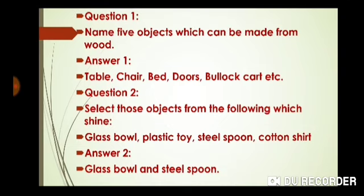Question number one: Name five objects which can be made from wood. पांच ऐसे objects बताएं जो लकड़ी से बनते हैं. Answer: table, chair, bed, doors, bullock cart etc. और भी आपके चारों तरफ जो भी लकड़ी से बना सामान आपको दिखाई दे रहा है, वो आप इसमें लिख सकते हैं.